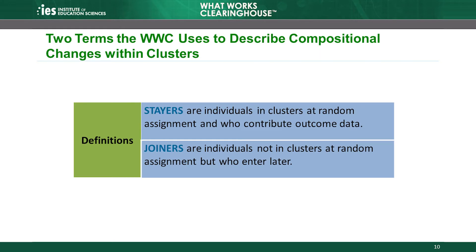The WWC uses two terms to describe the individual sample members who contributed to compositional changes within clusters. Stayers are individuals who were in clusters at the time of random assignment and stay until the end, contributing outcome data to the analytic sample. Those who leave the clusters after random assignment may contribute to individual-level non-response. Joiners are individuals who are not in clusters at random assignment but who enter later. When joiners contribute outcome data to the analytic sample, they can contribute to compositional changes.